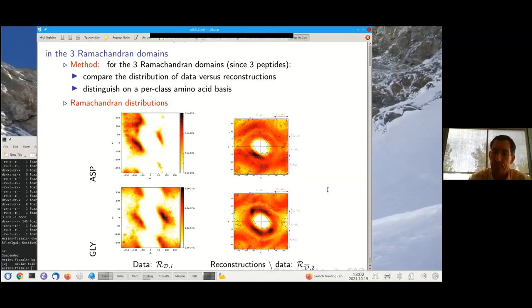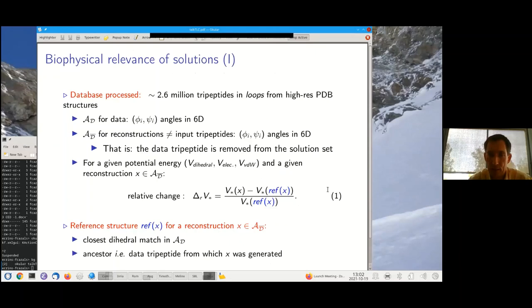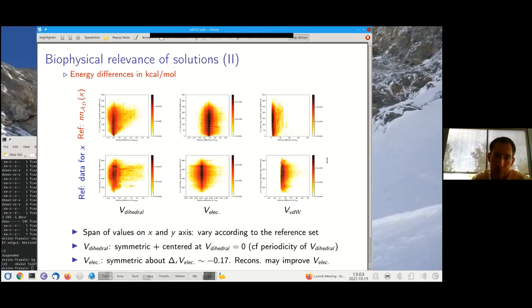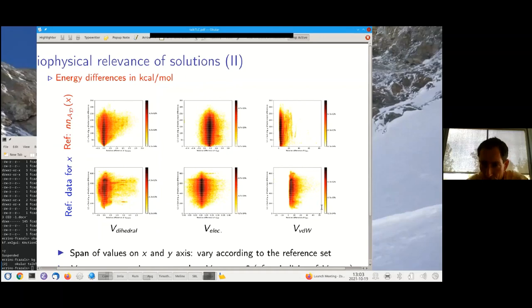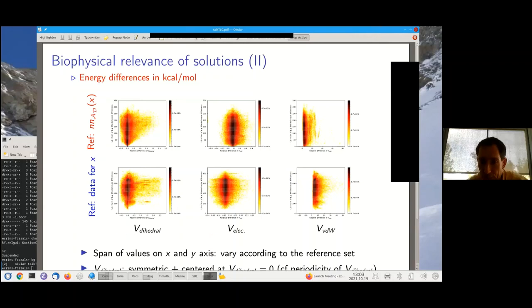And of course, we need also to take a look into the energetics. And in order to do this, we have to compare the energetics of a reconstruction by TLC against the energetics of a reference structure in the protein databank. So I'm not going to step into the technicalities, but let me try to convey the main message by looking at the plots. And so here we are studying three types of energetics: the energetics associated with dihedral angles, the energetics associated with electrostatic interactions, and the energetics, right end column, associated with van der Waals interactions.